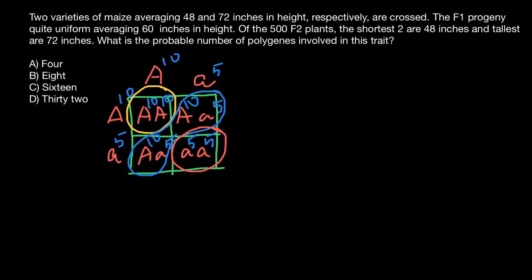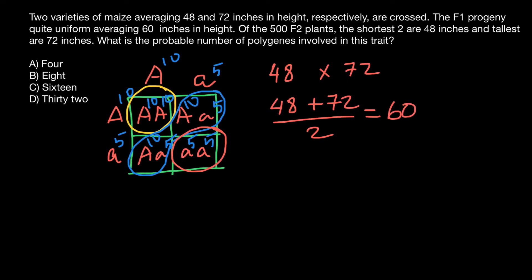Sometimes we say that the dominant allele adds 10 centimeters and the recessive allele is a defective allele that adds nothing to the trait. In today's problem, one parent is 48 inches and another is 72 inches, and the F1 generation is 60 inches. If we cross the 48-inch parent with the 72-inch parent, we add those two numbers and divide by two — 48 + 72 ÷ 2 = 60 inches — exactly what we see in the F1 generation.